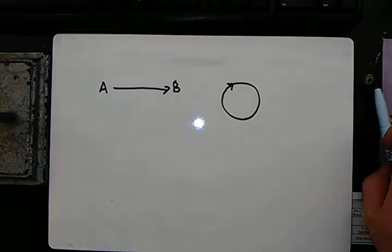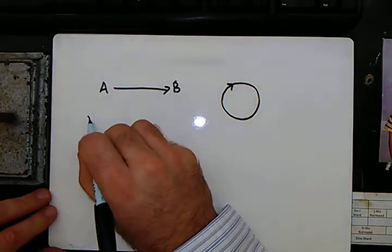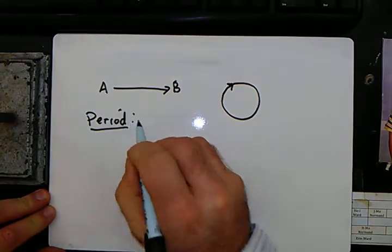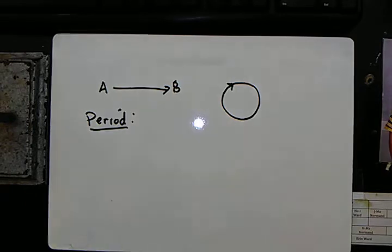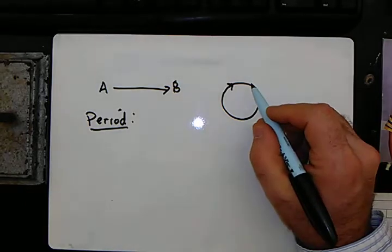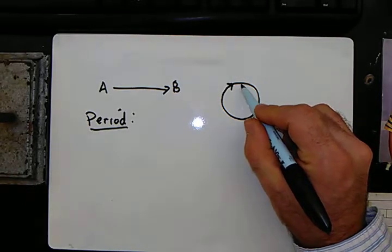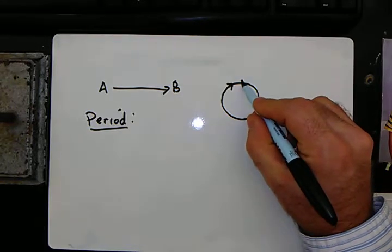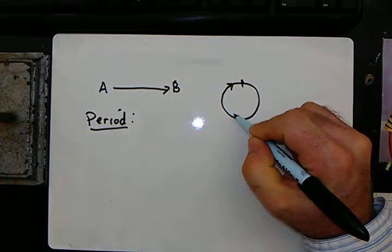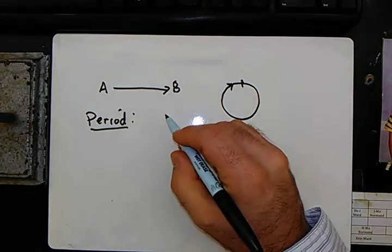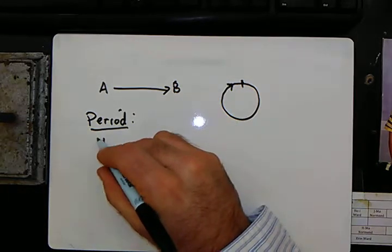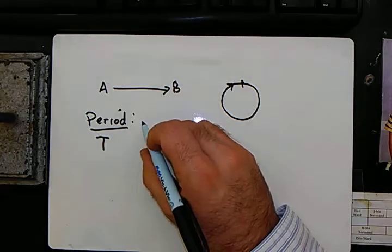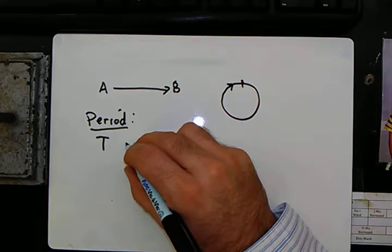There's something called the period. The period is simply the time it takes to go around a circle - from here all the way around back to here. The symbol for the period is capital T and the units are seconds.